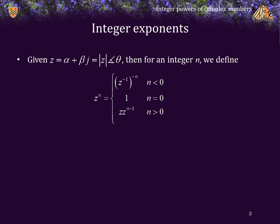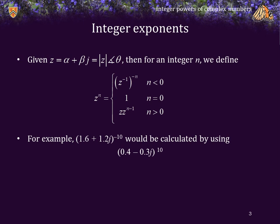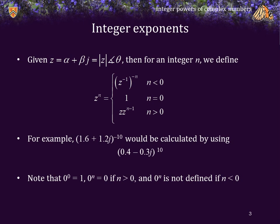How do you calculate z to the 5? You calculate z to the 4 and multiply that by z. How do you calculate z to the 4? You calculate z to the 3 and multiply that by z, and so on. The reciprocal is reasonably straightforward. For example, 1.6 plus 1.2j raised to the power negative 10 is the same as calculating the reciprocal of 1.6 plus 1.2j, which is 0.4 minus 0.3j, raised to the power 10. Note that 0 to the 0 is defined as 1, 0 to the n is 0 if n is greater than 0, and 0 to the n is not defined if n is less than 0.